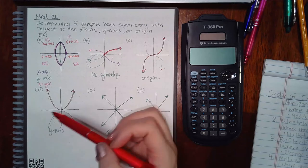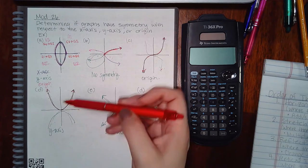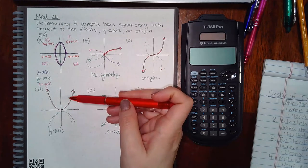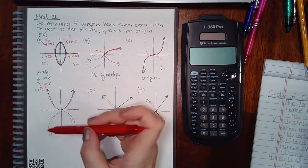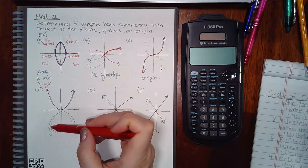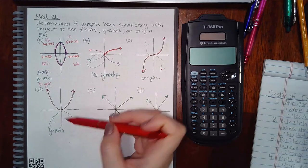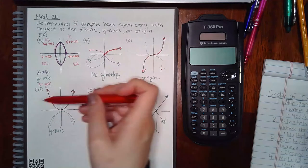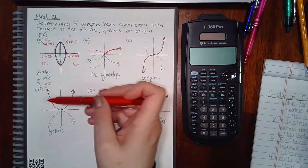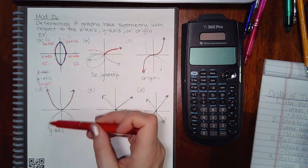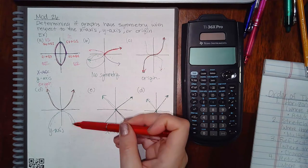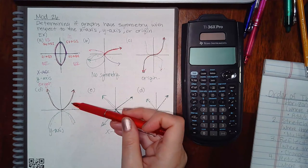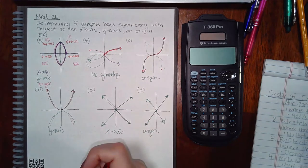If I do both flips — flip it over the x and then over the y — it results in a curve down here. Or if I flip over the y first, it looks exactly the same, and then flip over the x, I still end up with a curve below that does not land on the original. So it does not have symmetry with respect to the origin.